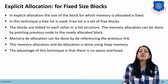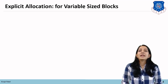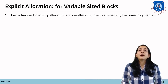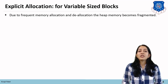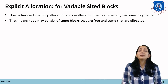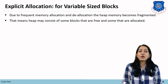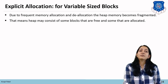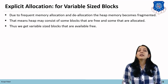The advantage of this technique is that there is no space overhead. Explicit allocation is also used for variable-size blocks. If the heap block size is not fixed, then due to frequent memory allocation and deallocation the heap memory becomes fragmented — meaning the heap may consist of some blocks that are free and some that are allocated, which is known as a variable-size block scenario.